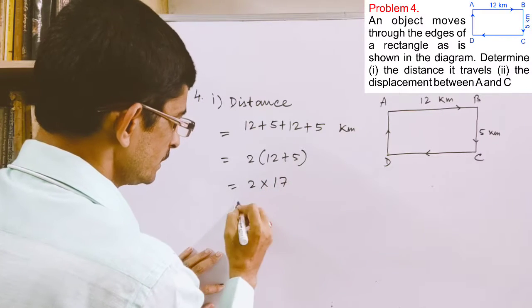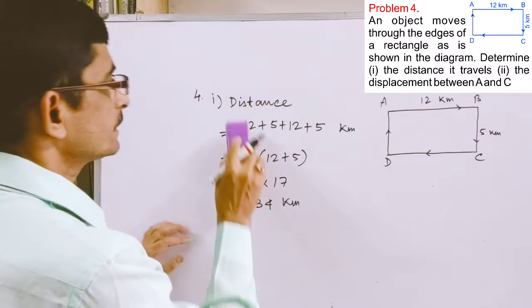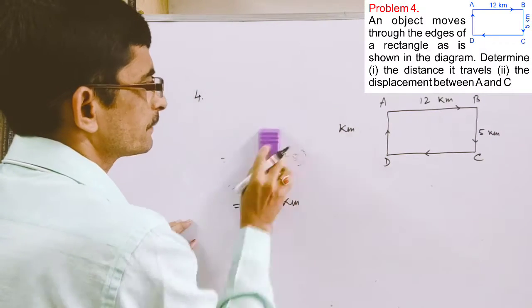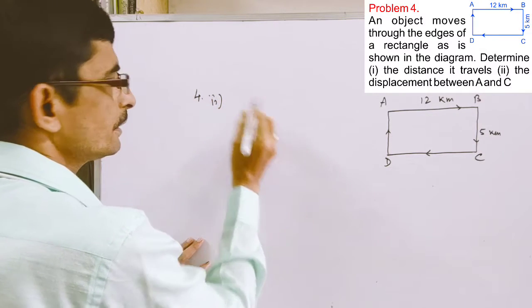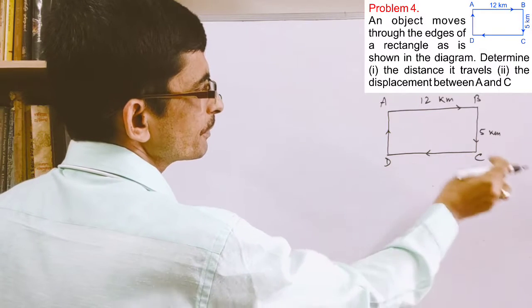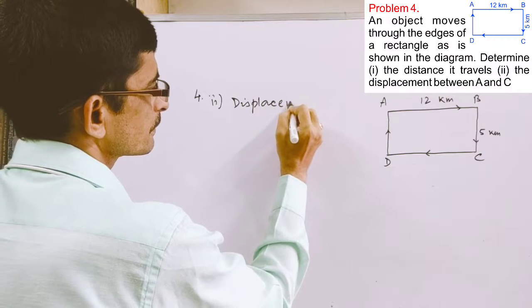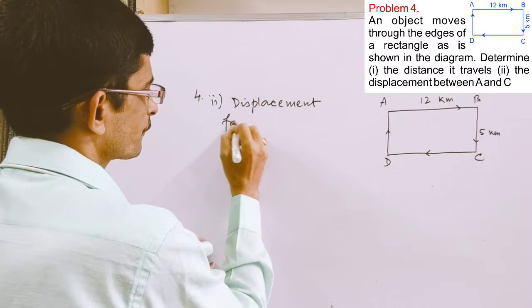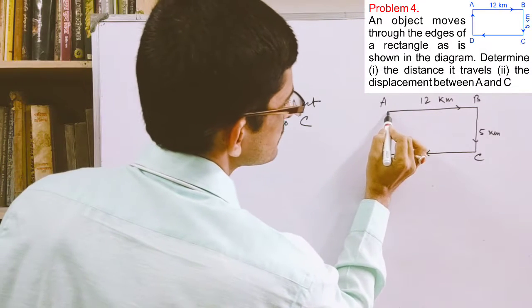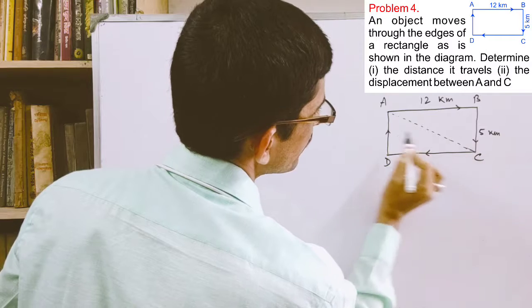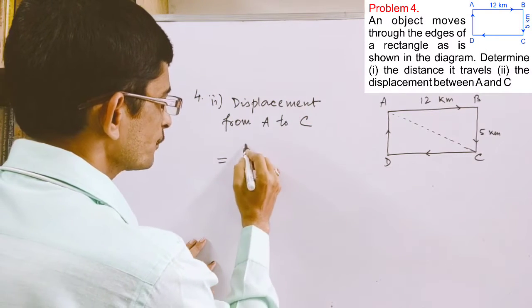Whereas the displacement will be 34 kilometers. The displacement, in the question it is asked, the displacement from A to C. So the displacement from A to C, this distance, the shortest distance is the diagonal of the rectangle, and that is square root under